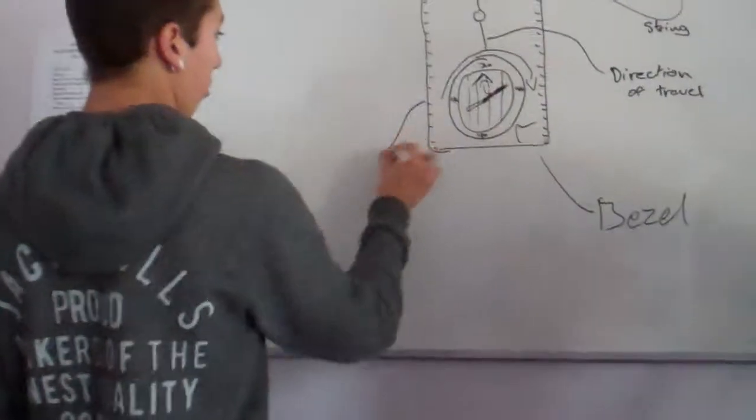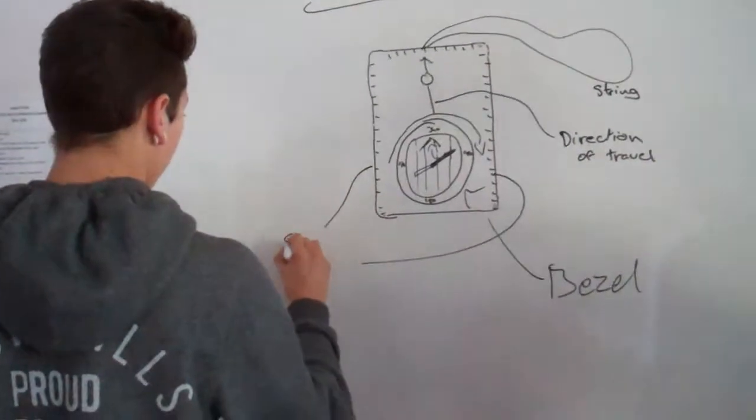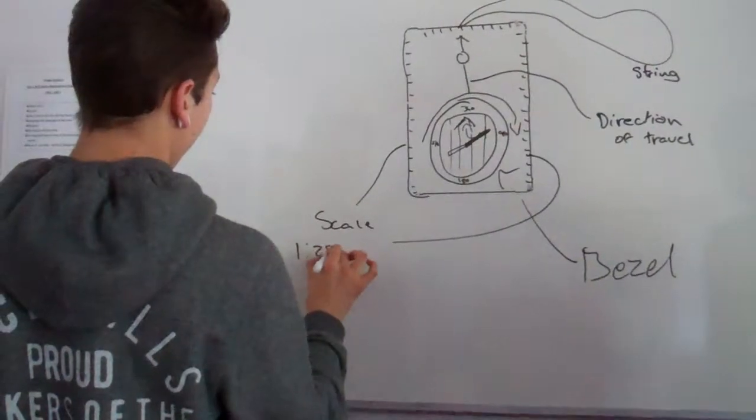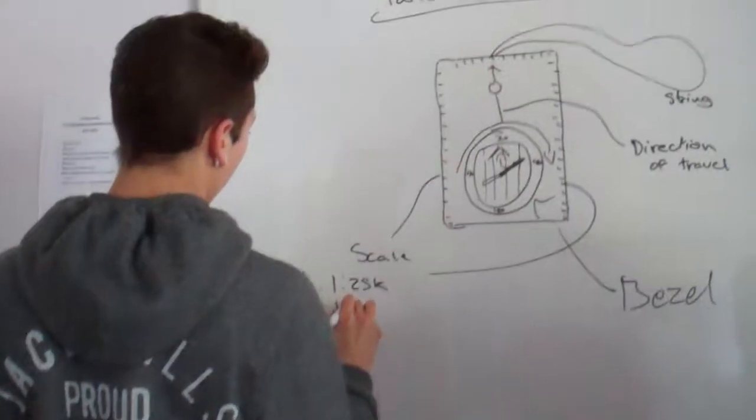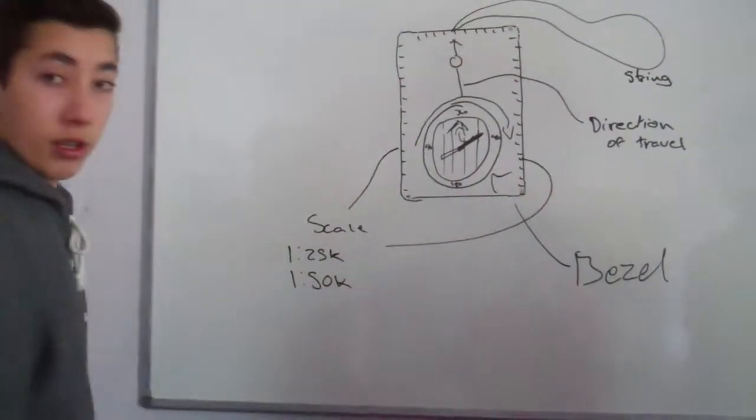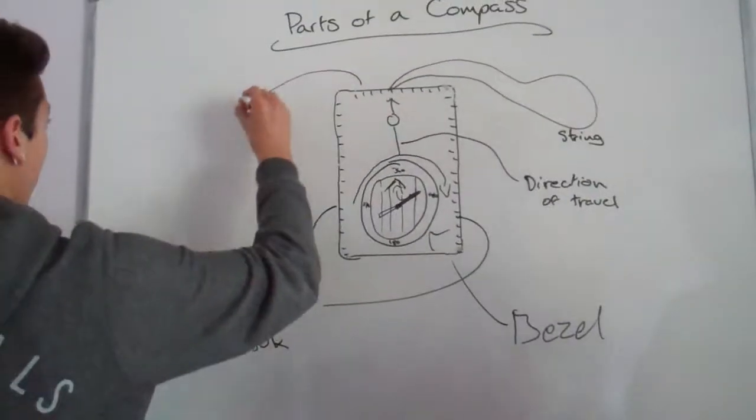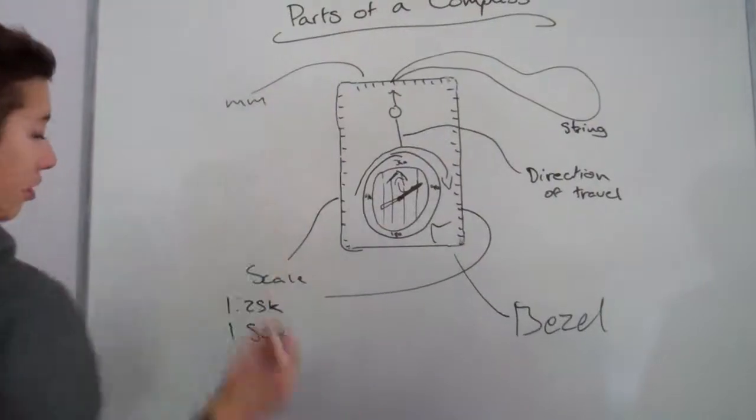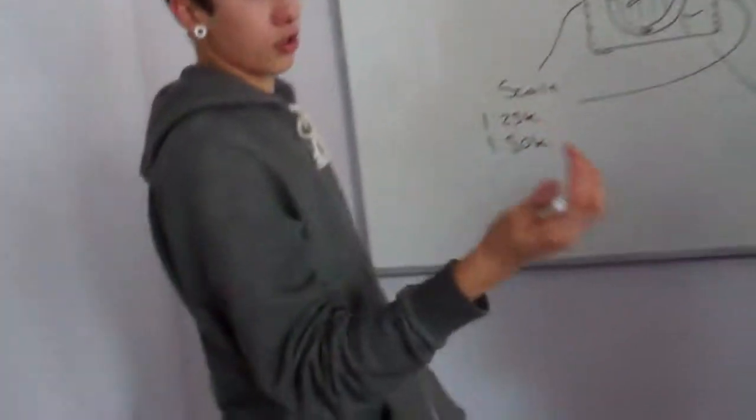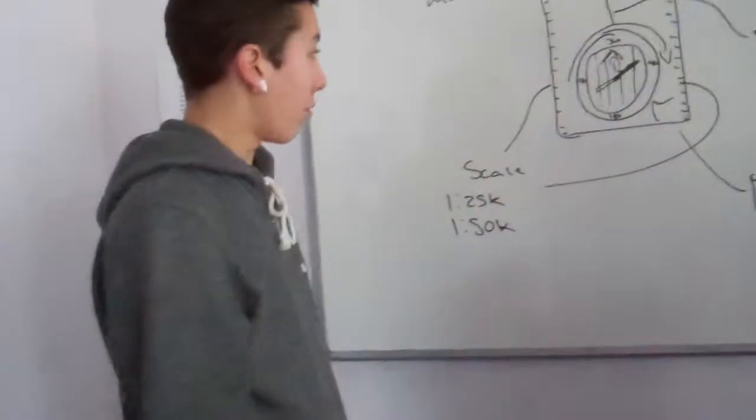These here, on the sides here, the scales. One of them is going to be 1 to 25,000 and the other side is 1 to 50,000. And then this one up here is millimeters. So it's just a unit of motion used to measure distance, not necessarily distance on the map, just used as a little measuring tool.